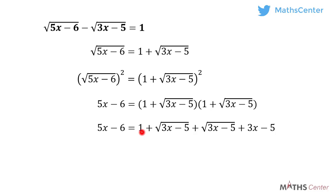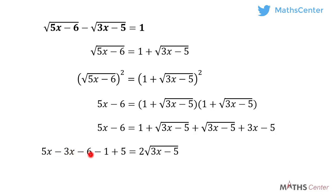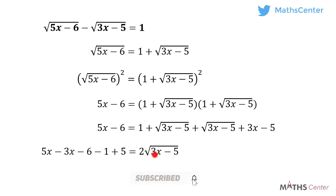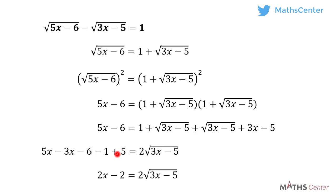I will send 1, 3x, and negative 5 over to the left hand side. When I do that I have 5x minus 3x minus 6 minus 1 plus 5, equal to square root of 3x minus 5 plus square root of 3x minus 5, which gives us 2 root of 3x minus 5. So: 5x minus 3x is 2x, and negative 6 minus 1 plus 5 is negative 2. This gives us 2x minus 2 equals 2 root of 3x minus 5.